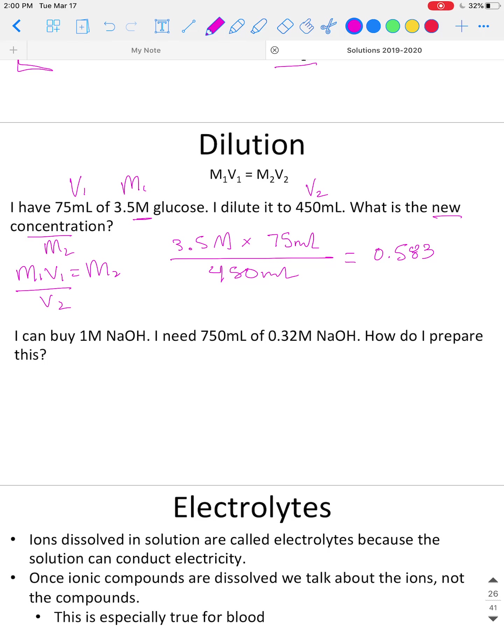And we get 0.583, and what's our units? Milliliters cancel out. It should be units of concentration, which is molarity. Units of concentration for this equation is molarity. So that's our answer for the first dilution problem.